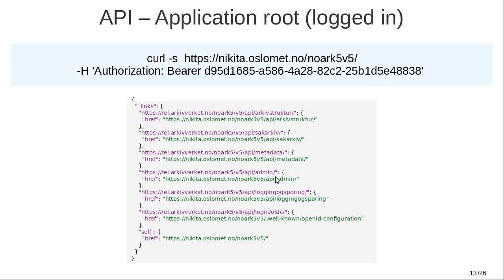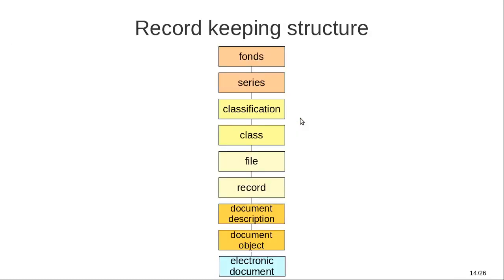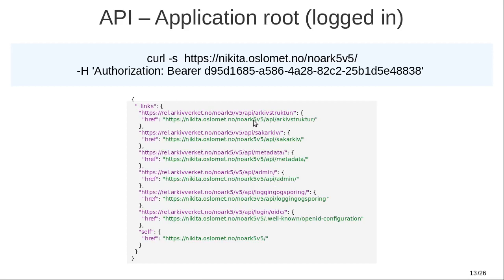What's worth making note of here is the metadata endpoint. All status values — for example, is a file open or closed — are defined here where you can find information about them as well. We have an administrative endpoint for undertaking administrative tasks, and we have a logging and tracing endpoint that gives access to a change log for objects as well as an event log. NOARK in particular has defined an approach to case handling, and the functionality for case handling is defined here, along with the record keeping structure endpoint.